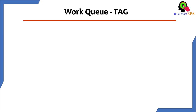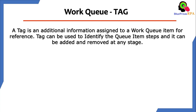So what is a tag in Work Queue? A tag is an additional information assigned to a Work Queue item for reference. A tag can be used to identify the Queue item steps and it can be added and removed at any stage.